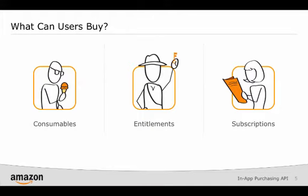Subscriptions are essentially entitlements that are bound by a period of time and auto-renew at the end of that period. Like entitlements, they are available on all eligible devices registered to the customer's Amazon account. Your app can have multiple subscriptions defined for it, with each subscription having multiple periods. Examples of subscriptions are ongoing access to features of your app or regular updates to your content like a magazine subscription.